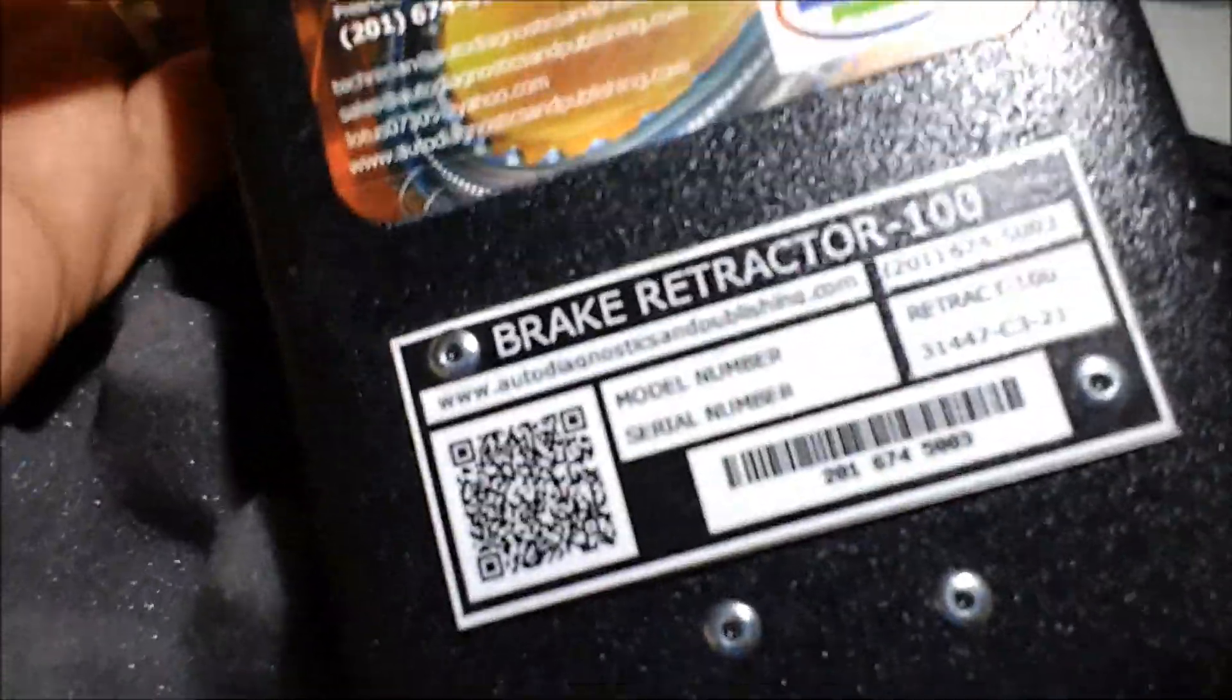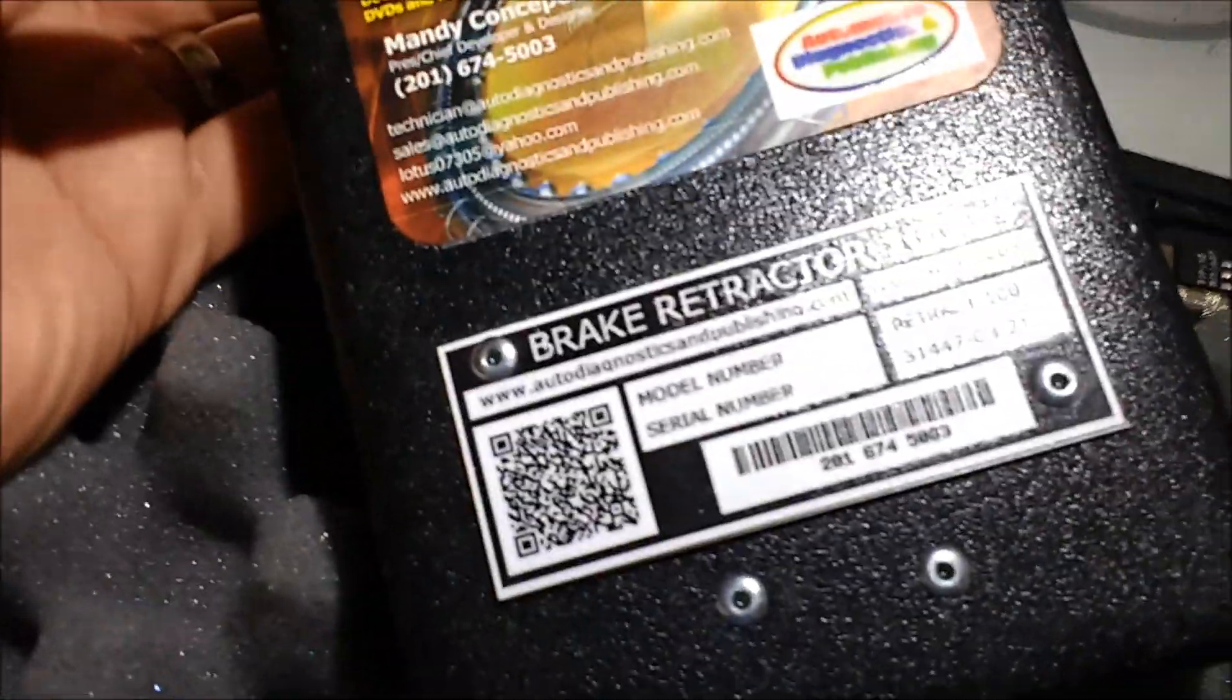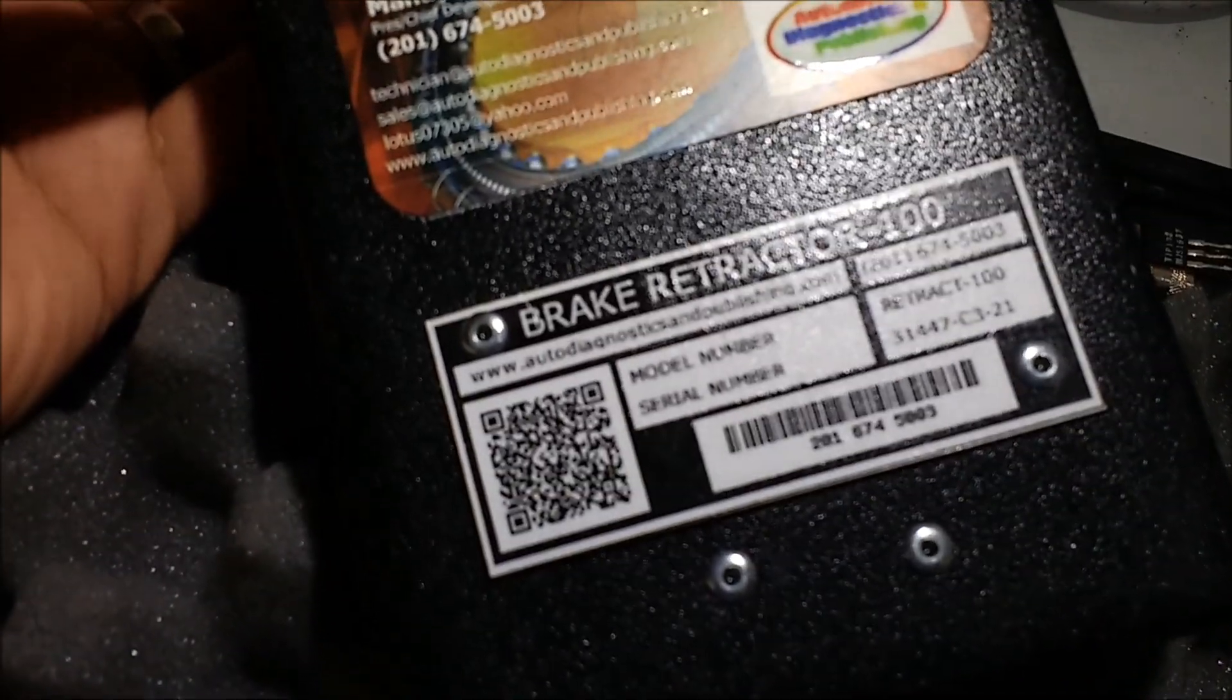This is normally used uphill. You're going uphill and then you stop on a red light with the vehicle standing still uphill. So the electric parking brake actually actuates and you can let go of the brake pedal, so it'll hold the car in place.